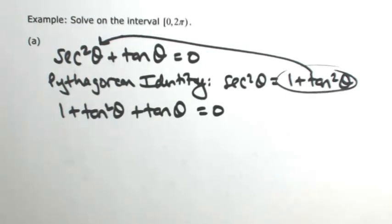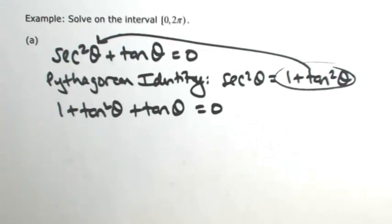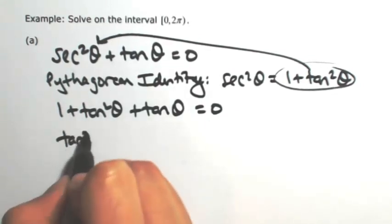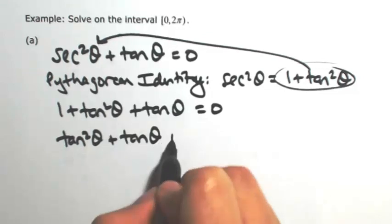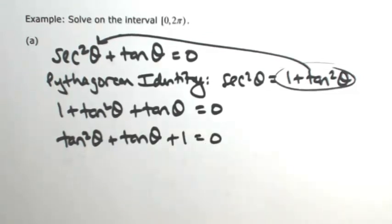So I'm going to do a substitution back in the original equation. Now that I have everything in terms of the tangent of theta, I'm going to rewrite this so that it's quadratic in form. So the tangent squared term would be first, followed by just a regular tangent, and plus my number.